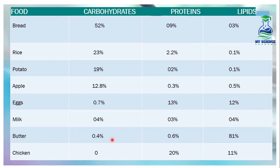Butter has 0.4% carbohydrates, 0.6% proteins and 81% lipids. Chicken has 0% carbohydrates, 20% proteins and some lipids. These are common foods we mostly eat in daily life. As we have seen, eggs have maximum protein, butter has maximum fats and lipids, and bread contains maximum carbohydrates.